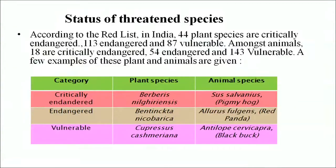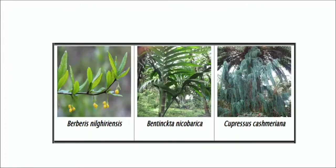Lower risk: a taxon that has been evaluated and does not satisfy the criteria for critically endangered, endangered or vulnerable. Data deficient: a taxon where there is inadequate information to make any direct or indirect assessment of its risk of extinction. Not evaluated: a taxon not yet assessed against the above criteria. According to the red list in India, 144 plant species are critically endangered, 113 endangered and 87 vulnerable. Among animals, 18 are critically endangered, 54 endangered and 143 vulnerable. Pictures of some of these plants and animals are shown below.